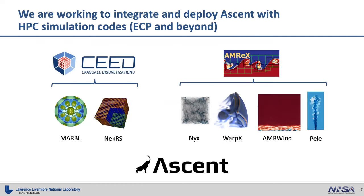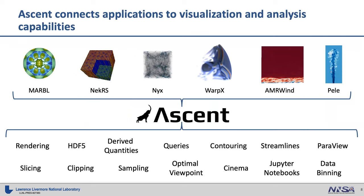In ECP, we've focused on co-design centers to make it easy to get data from common frameworks into Ascent. Work has been done to wrap MFEM and AMReX data into representations Ascent can read. If you're working on one of these teams, your data is probably already wrapped and available in Ascent pretty easily. Ascent is really just a pipeline or connection that gives you capabilities ranging from basic rendering all the way to the more complicated algorithms the Alpine project is creating.